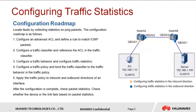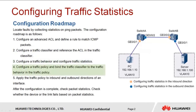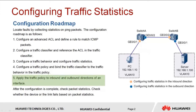We can collect statistics on ping packets to locate faults. There are five steps. One, configure an advanced ACL and define a rule to match ICMP packets. Two, configure a traffic classifier and reference the ACL in the traffic classifier. Three, configure a traffic behavior and configure traffic statistics collection. Four, configure a traffic policy and bind the traffic classifier to the traffic behavior in the traffic policy. Five, apply the traffic policy to inbound and outbound directions of an interface.